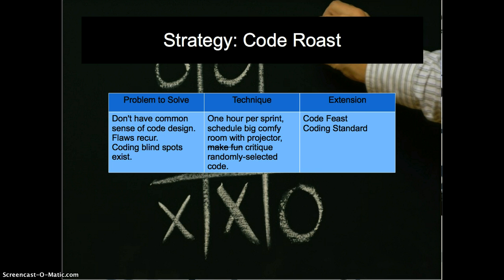A code roast is a strategy where sometimes a team doesn't have a common sense of code design — people don't agree on style and have blind spots. Take an hour in a room with a large projector and comfortable chairs, pull up a piece of code, and have a group critique. Everyone suggests how they would change it, what's wrong with it, what kinds of problems it has. They argue through whether any particular feature is a benefit or a detriment, and slowly they arrive at a common understanding of what constitutes good code.